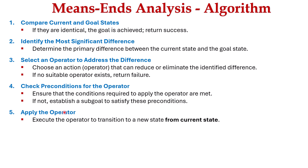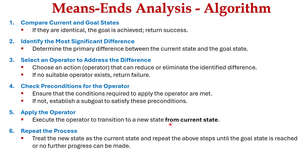In the fifth step, we apply the operator — that is, we execute the operator to transition to a new state from the current state. Finally, we repeat the process by treating the new state as the current state and repeating the above steps until the goal state is reached or no further progress can be made.